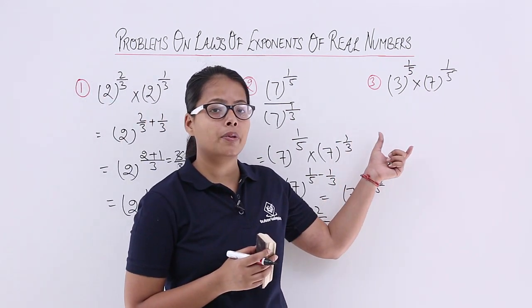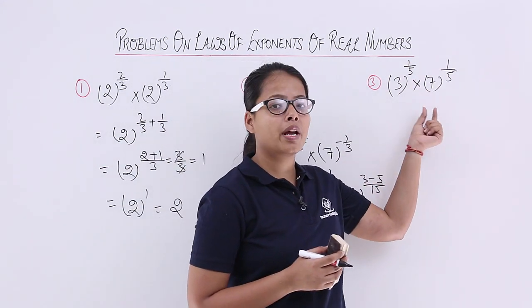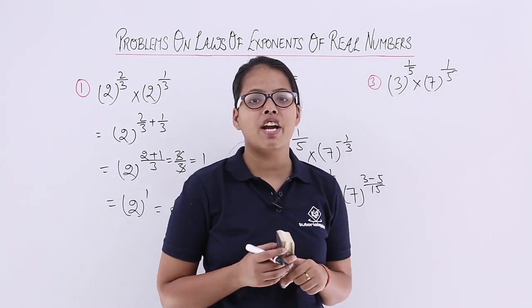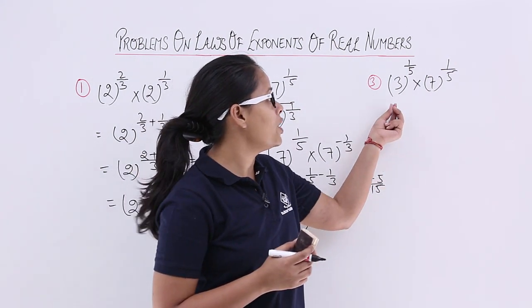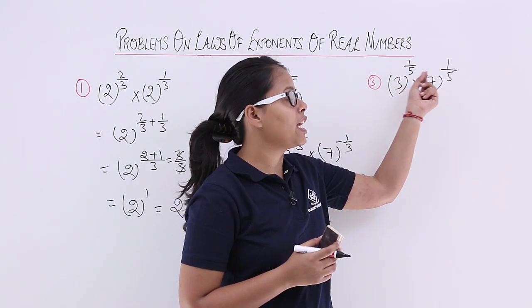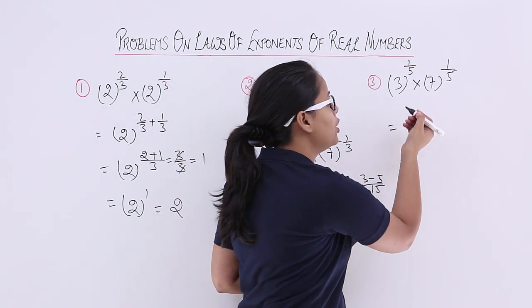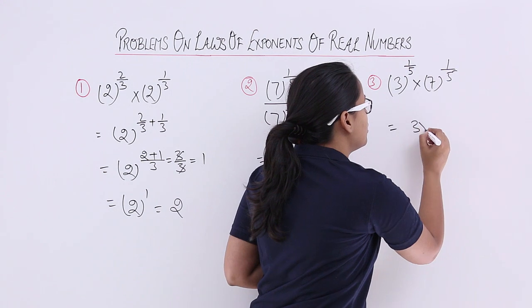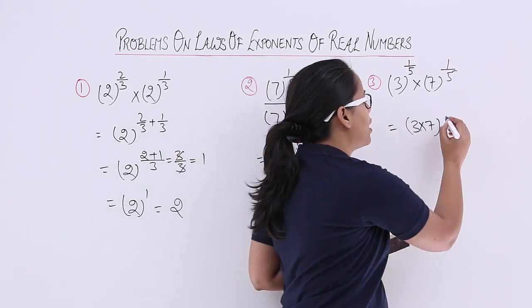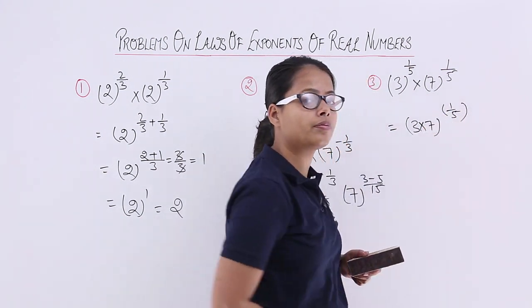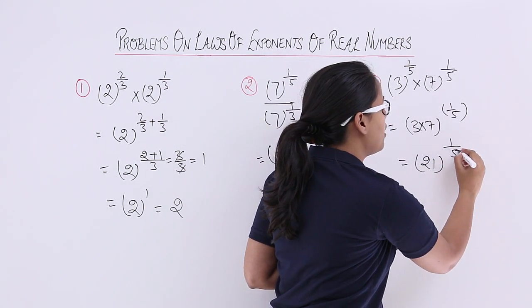Now let's take the third question, which says 3 raised to power 1 by 5 multiplied by 7 raised to power 1 by 5. You can see here that this expression exactly looks like the fourth law, in which the bases are different but the exponents are the same. To get the final result, you multiply the bases: 3 into 7 is 21, and the exponent remains as it is, which is 1 by 5. So the final result is 21 raised to power 1 by 5.